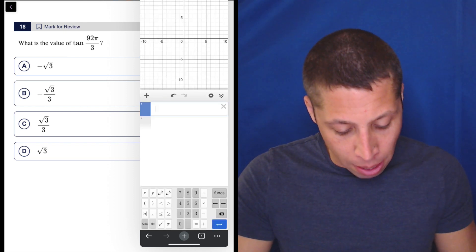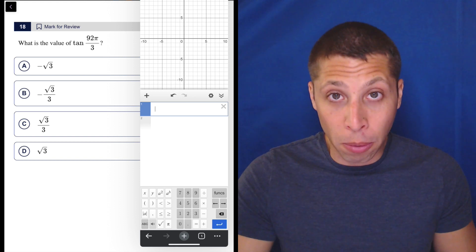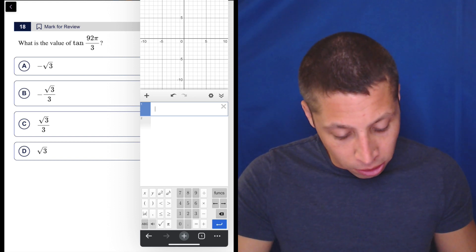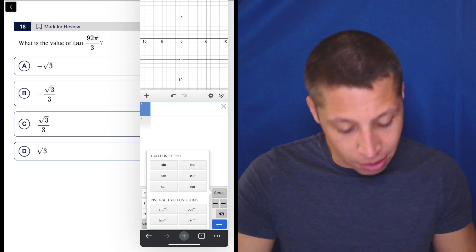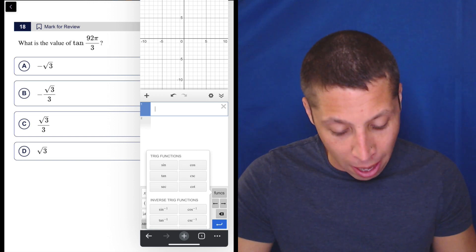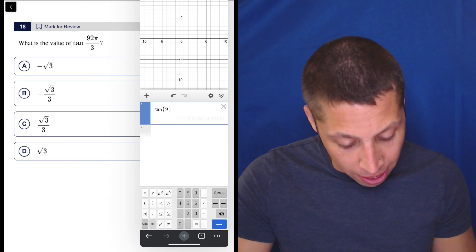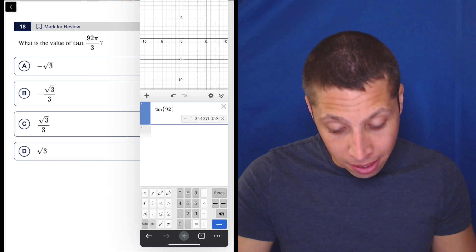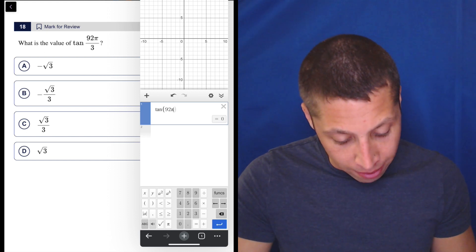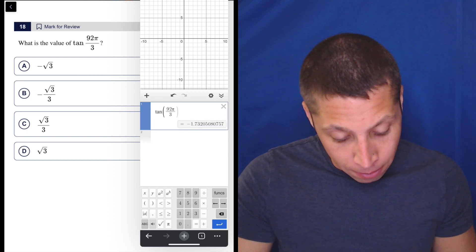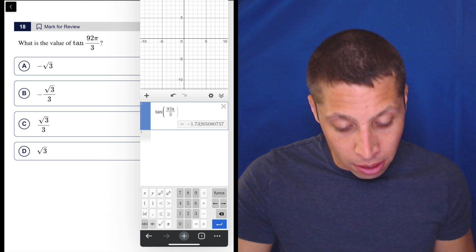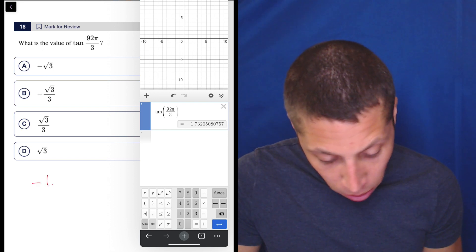I don't see tangent on my normal buttons, but if I go to funk, we're going to see right away they give us the trig functions at the top. So tan, and then 92 and pi is there as a button, so pi and then just divided by 3. It's a messy number, so you might need to write it down: negative 1.73205.